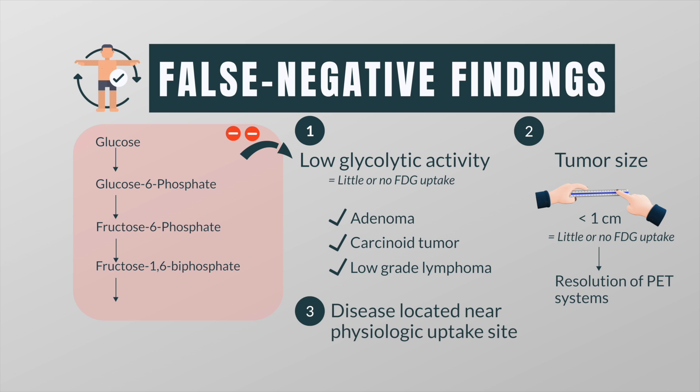Also, in diseases located near physiologic uptake sites — such as the heart, the bladder, the kidney, and the liver — FDG-PET should be complemented with other imaging modalities to minimize false negative findings.